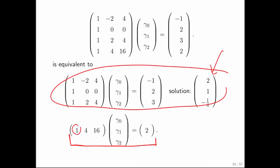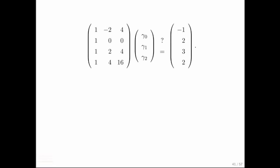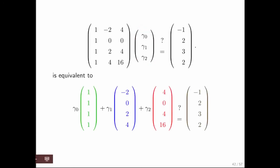The question now becomes: does that solution also satisfy the additional equation? And the answer is yes, because one times two plus four times one is six, minus one-quarter times sixteen is minus four, giving six minus four equals two — and that's indeed what we needed. That's because we chose the new point to lie on the polynomial resulting from the original three points. So if we ask whether we can find a solution, the answer is yes, and the right-hand side is in the span of the columns.